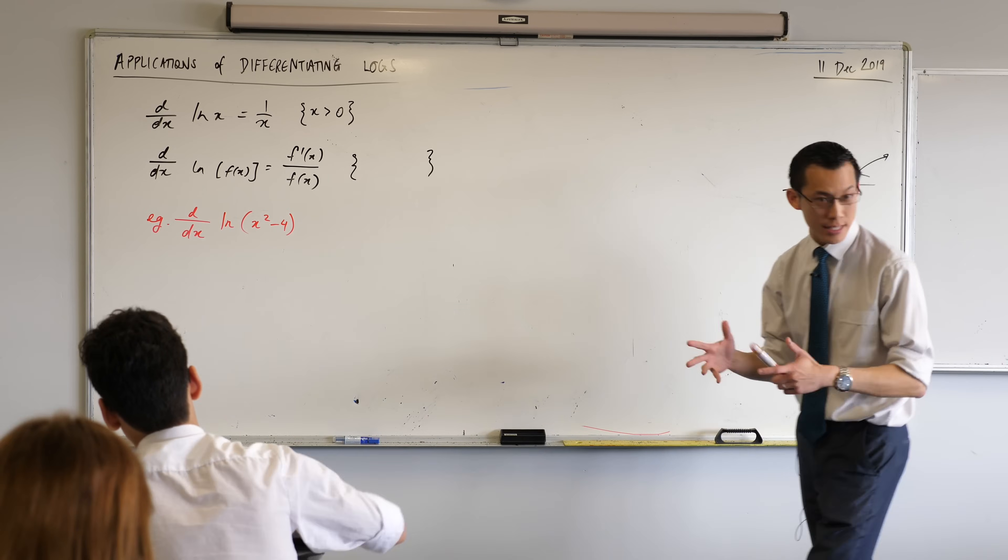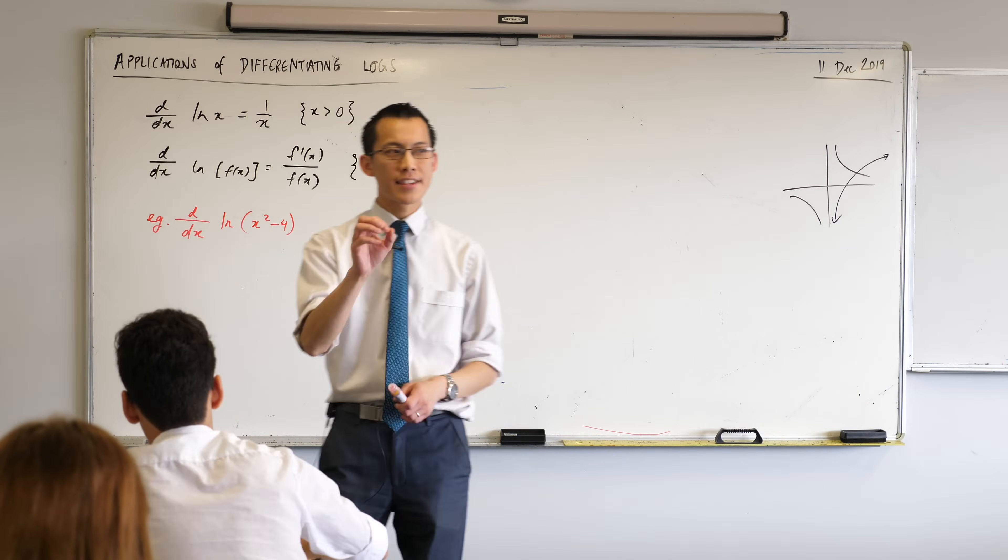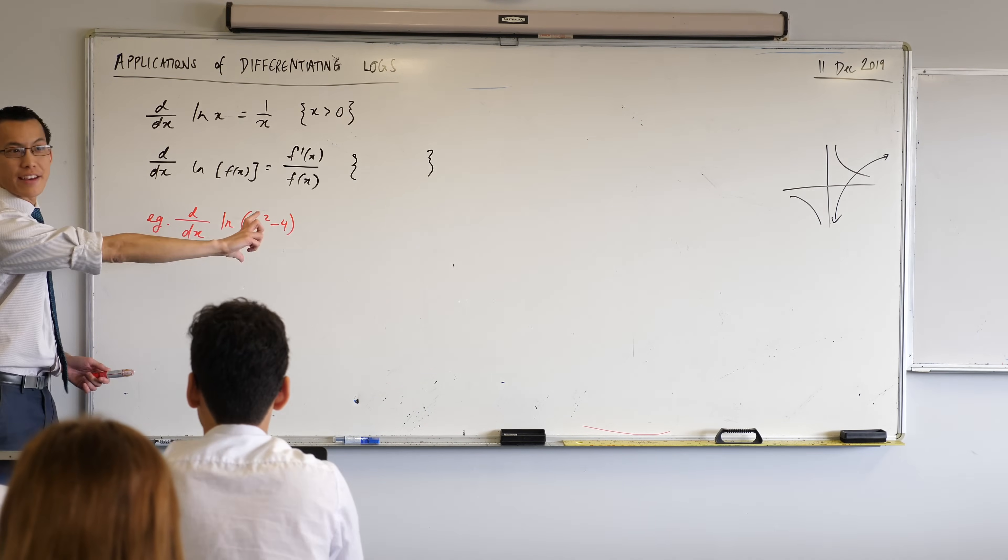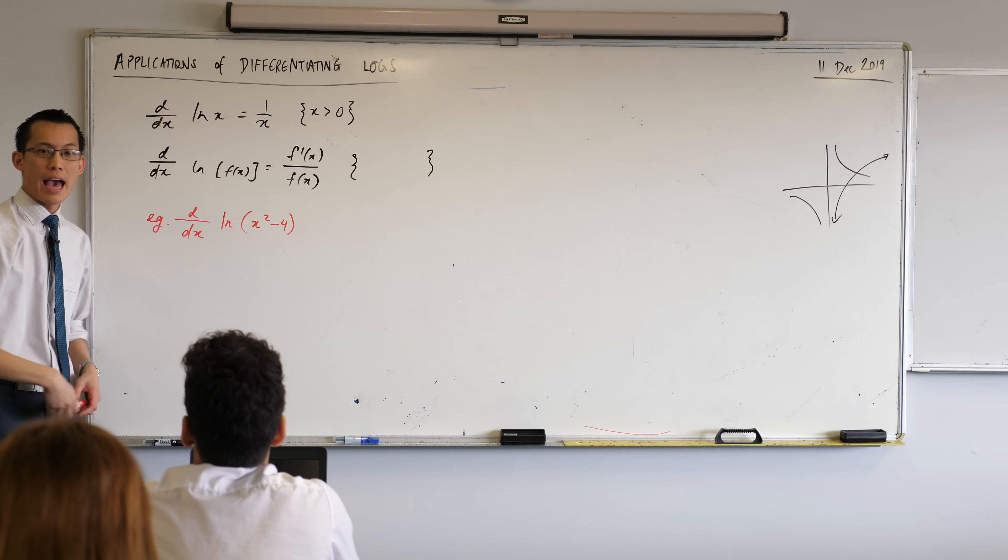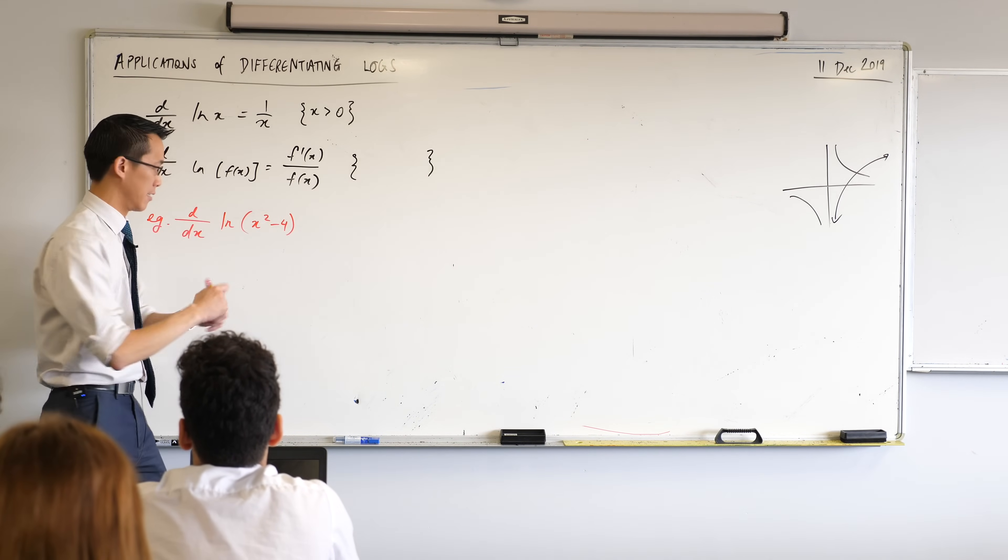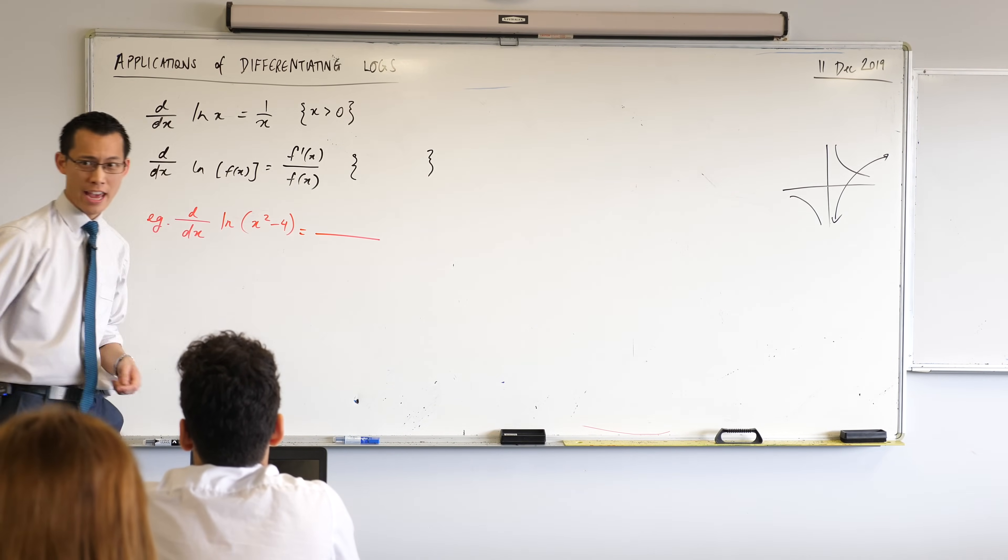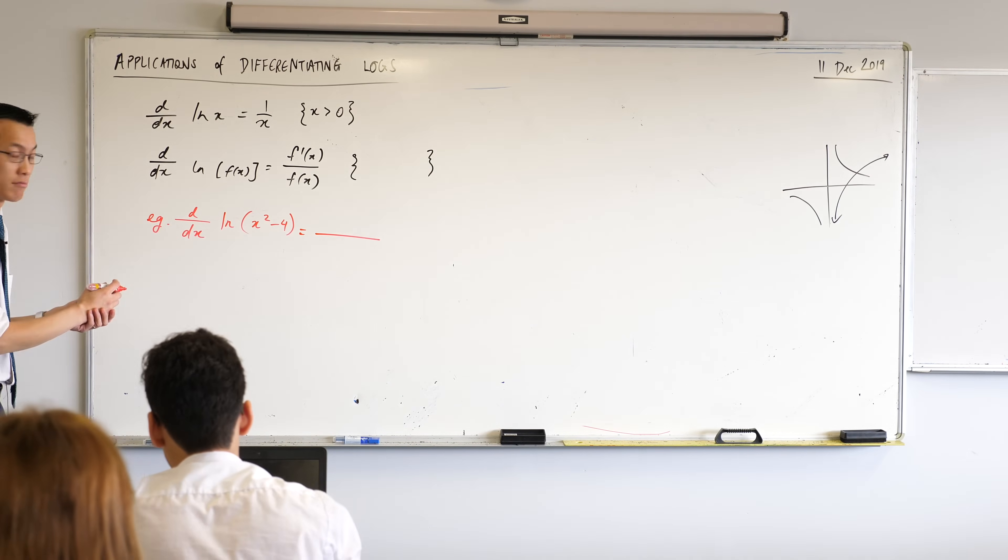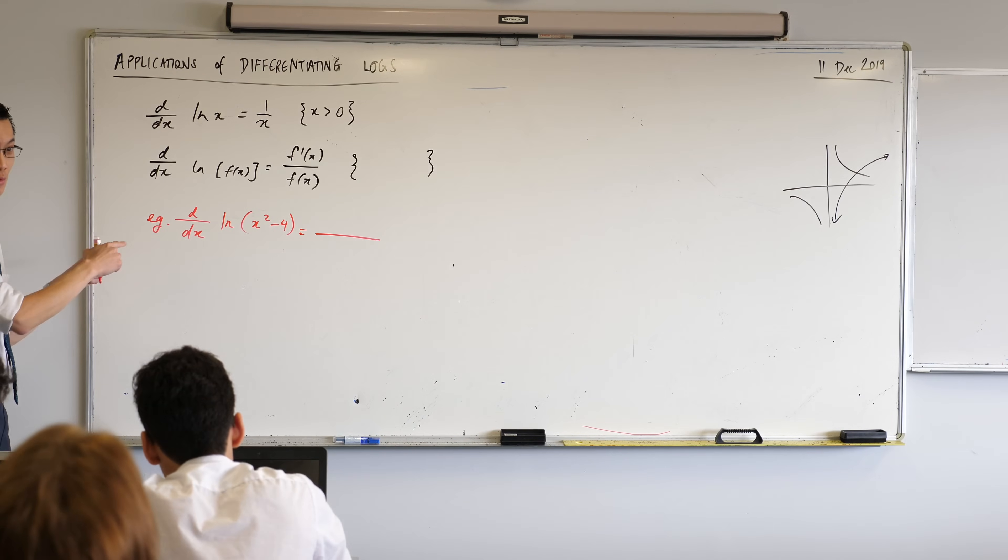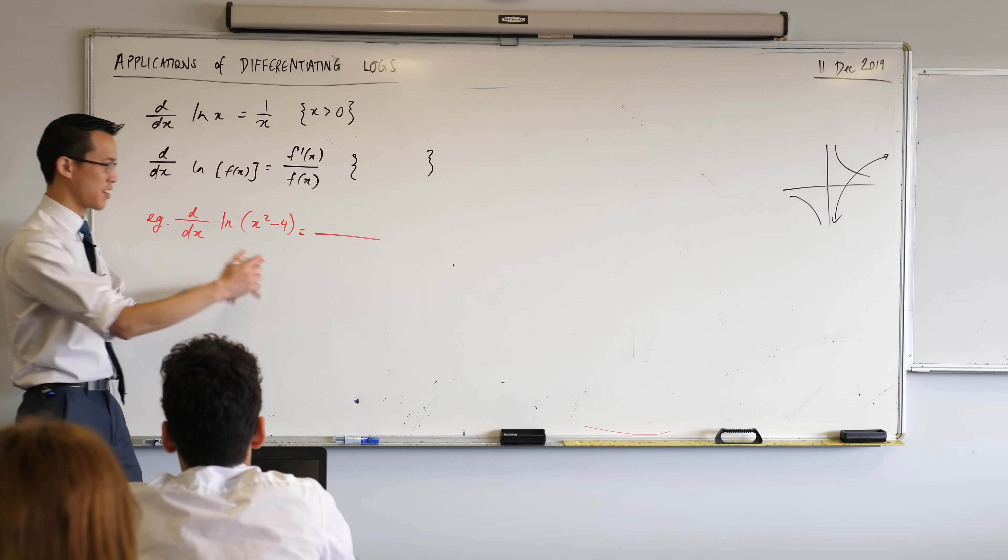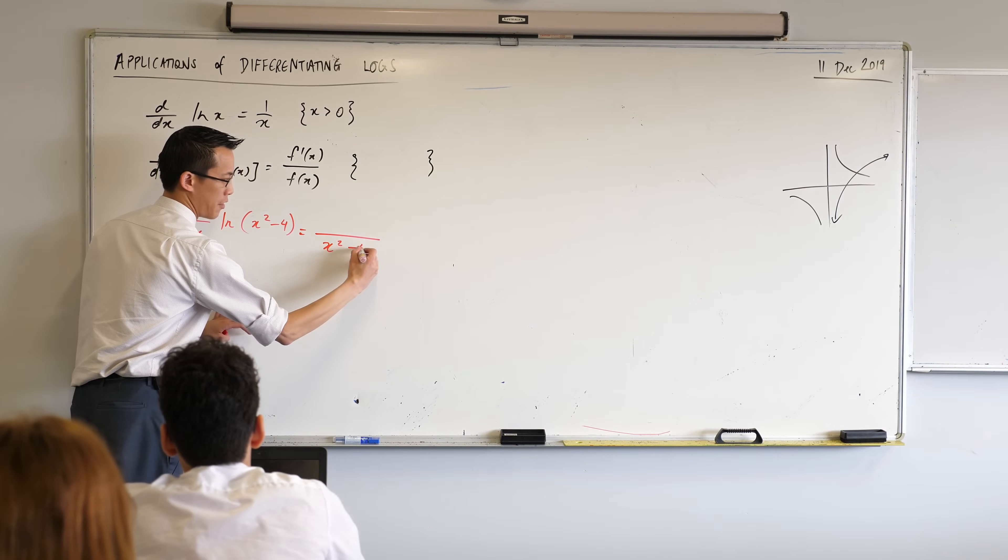Okay, so here's an example. Let's think about the answer algebraically first because you can just use this rule. And then we'll use Desmos to help us interpret what should we put in here. So firstly, F dash on F. In this context, what's F? It's right there. I've written it. Just read it out. It's x squared minus 4. That's the inside function. So I'm just going to chuck that on the denominator.